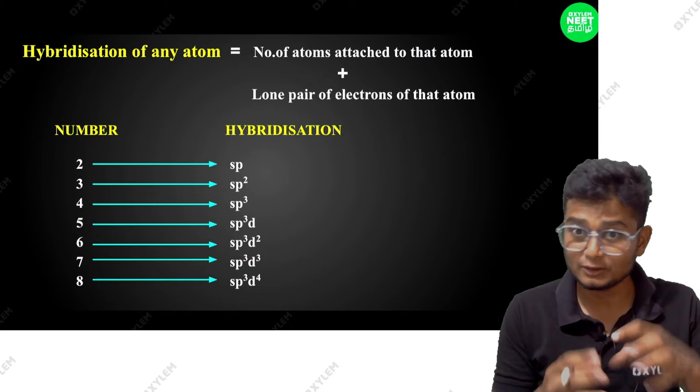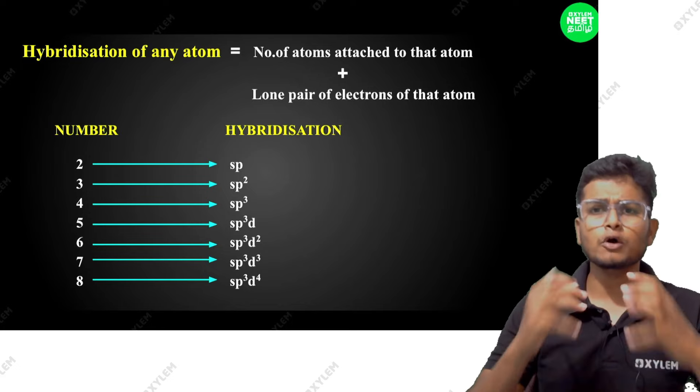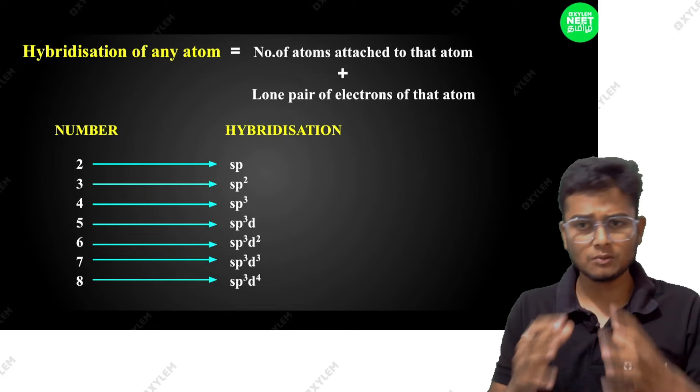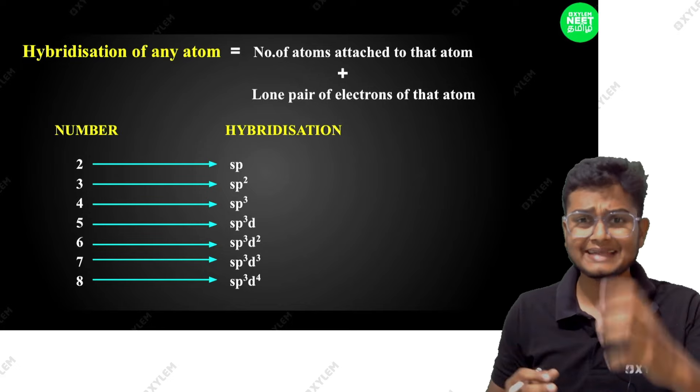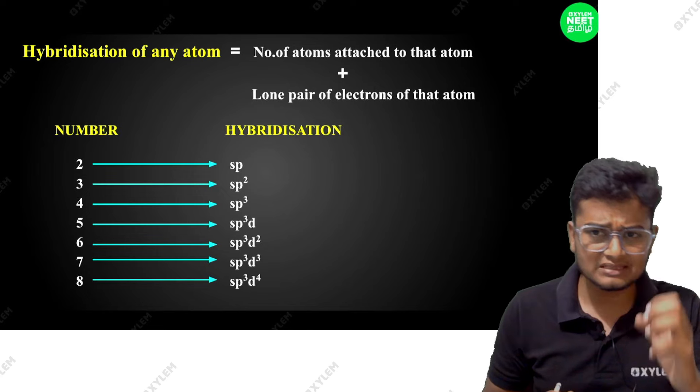Hybridization is the intermixing of atomic orbitals. Why does it matter? Why a molecule is formed. A molecule is formed with a central atom. The central atom undergoes hybridization.